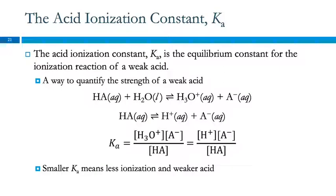So the acid ionization constant, Ka, is an equilibrium constant. So there's chapter 16. We learned about equilibrium constants. Ka is the equilibrium constant for the ionization of an acid. It's a way to quantify how strong a weak acid is.